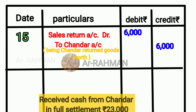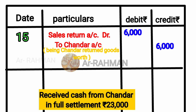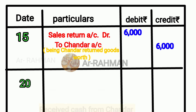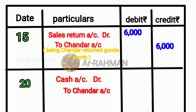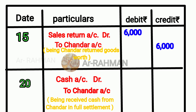Next question: received cash from Chander in full settlement. Debit the receiver, credit the giver — we have to receive, that is debit. Cash account Dr — which account to receive? Chander account — to Chander account. Being received cash from Chander in full settlement. The value is Rs.23,000 and here also Rs.23,000.